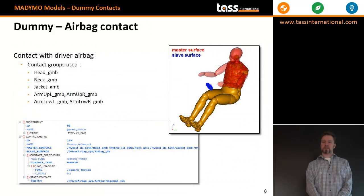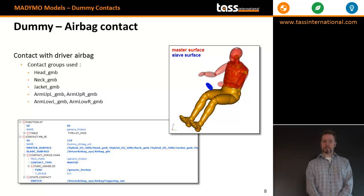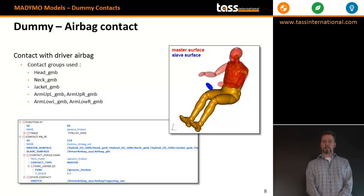For contact with the driver airbag, the head, neck, thorax, and arms are defined as the dummy contact group, and the FE group for the driver airbag is the FE side. For MBFE contact, the FE component is always the slave.